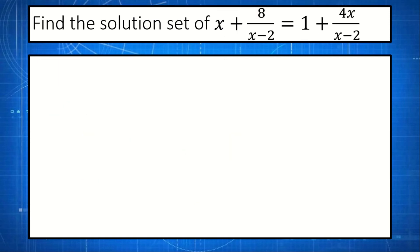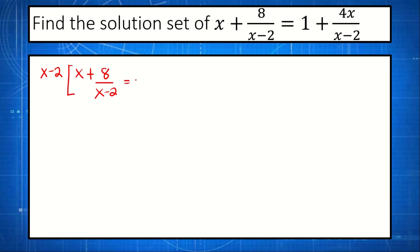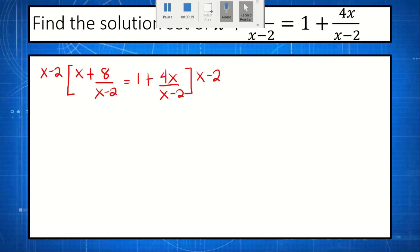Let's try example number 2: Find the solution set of x plus 8 over x minus 2 equals 1 plus 4x over x minus 2. First, we multiply both sides of the equation by the LCM, which is x minus 2. So we have x minus 2 multiplied to x plus 8 over x minus 2, equals 1 plus 4x over x minus 2, all multiplied by x minus 2.